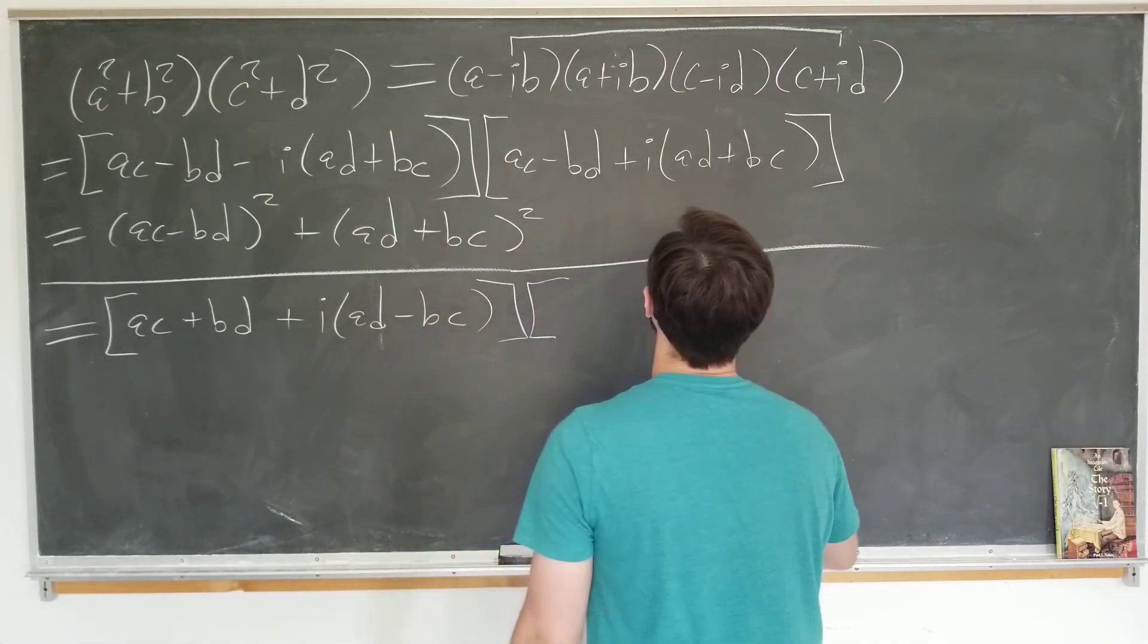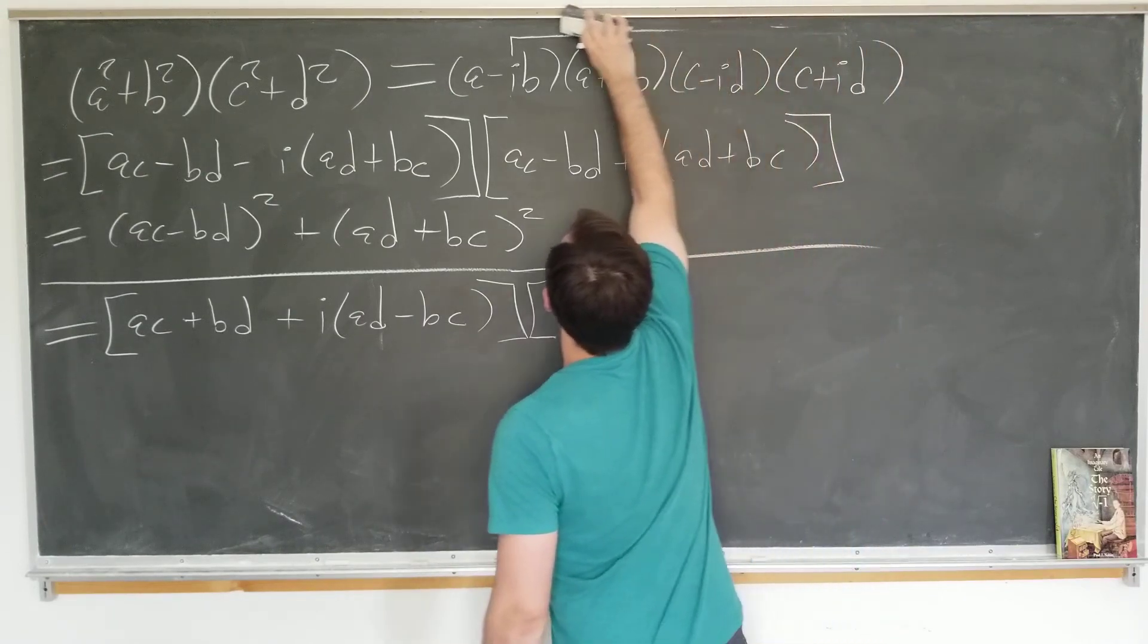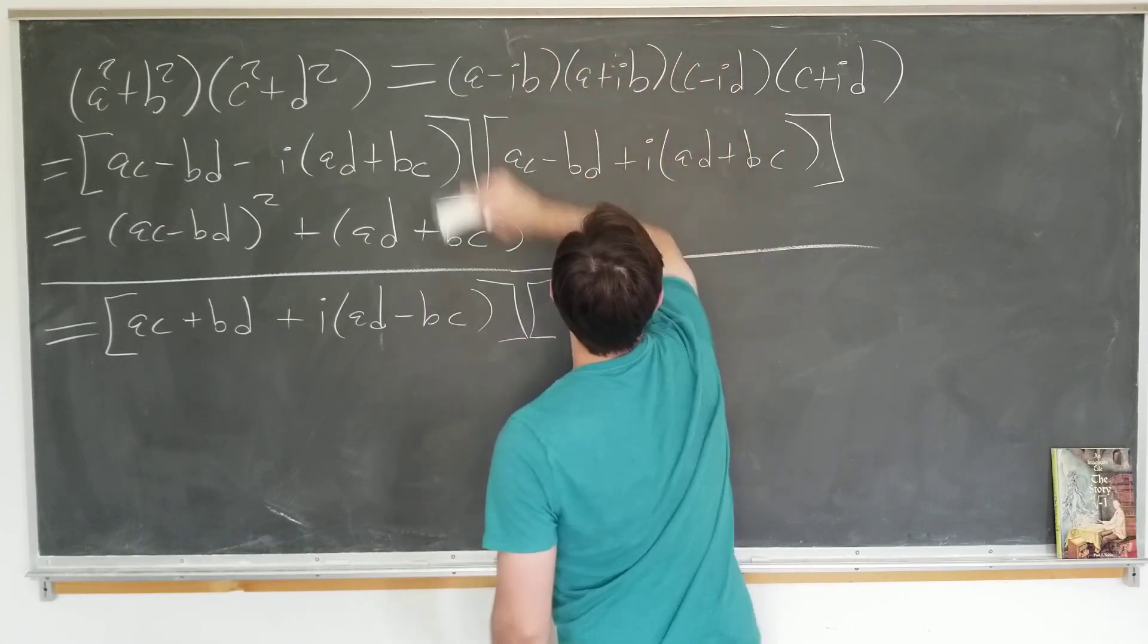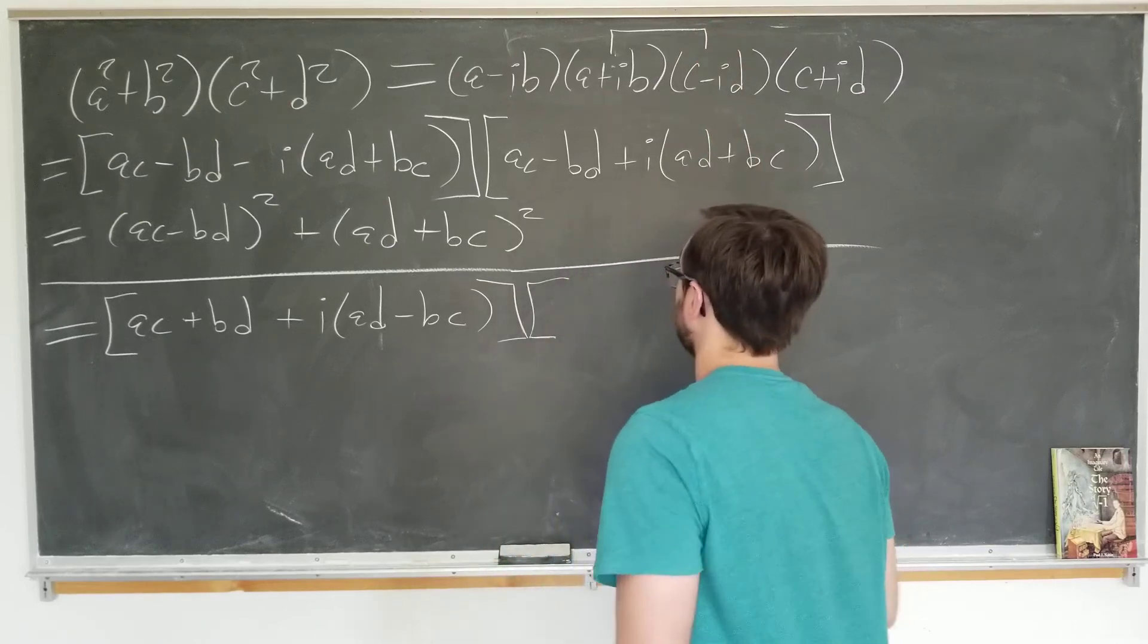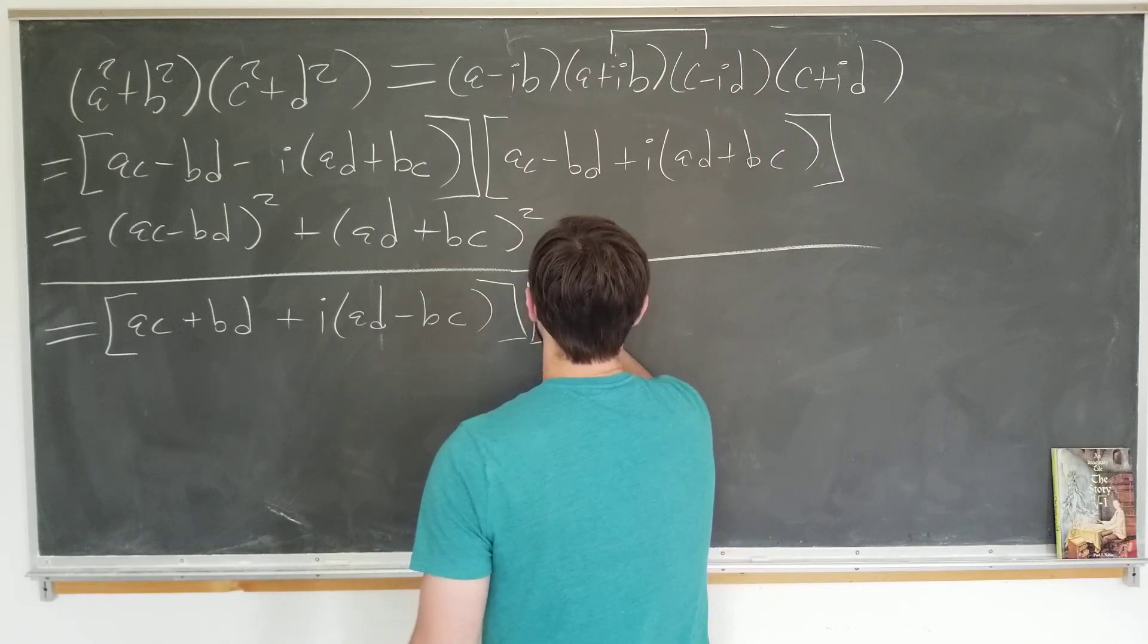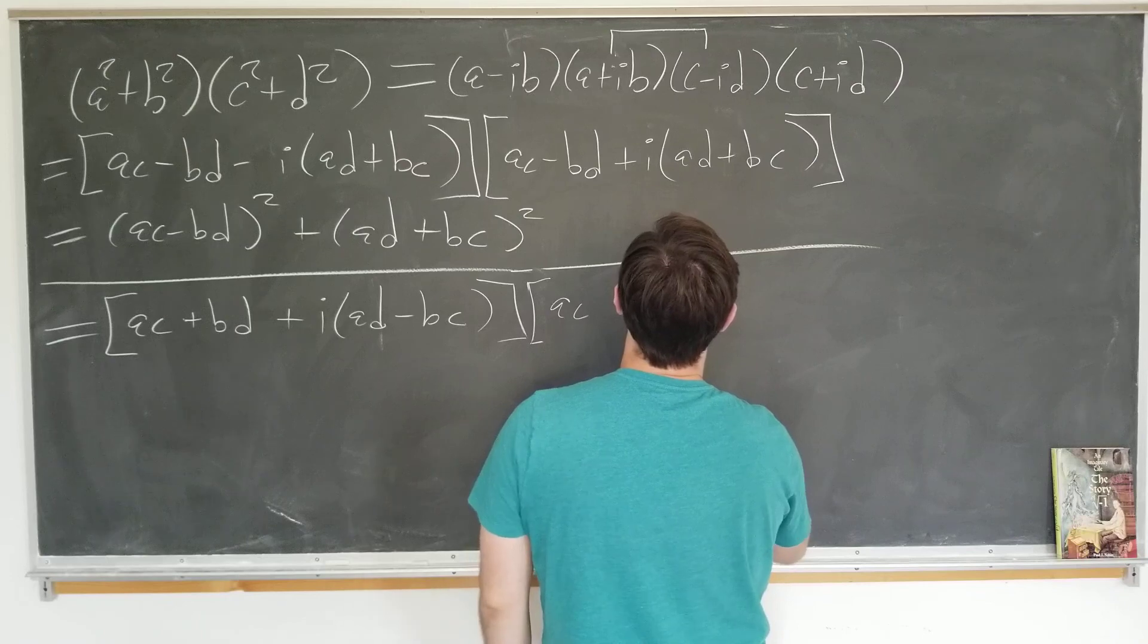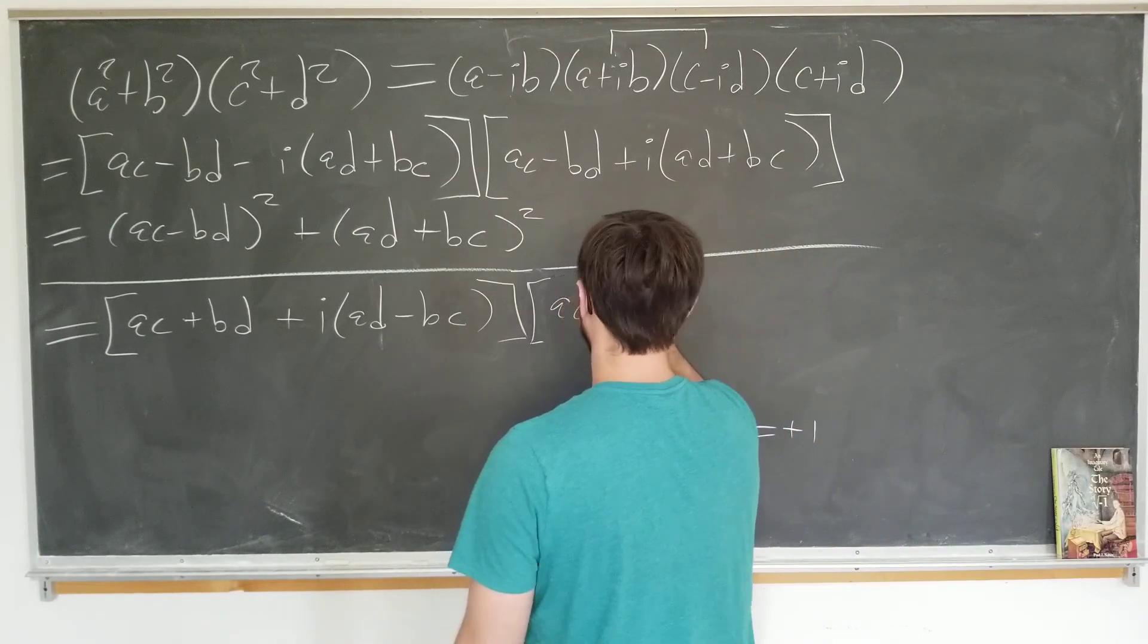And for the second term, we're going to multiply the inner terms. We did the outer term. Now we're going to do the inner terms. So this one is AC. The real term is minus i squared BD, which is plus BD. Great. We see that it's the same for the real term.